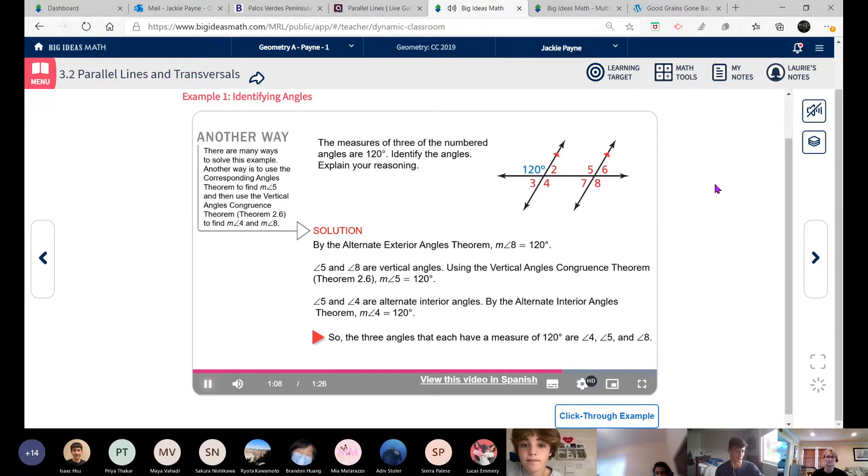Another way. There are many ways to solve this example. Another way is to use the corresponding angles theorem to find the measure of angle 5, and then use the vertical angles congruence theorem to find the measure of angle 4 and the measure of angle 8. And so when you see another way, that tells you if you have to do a proof, there's more than one way, usually. But there's usually a best way that's shortest. Either way, there's more than one way to do that.